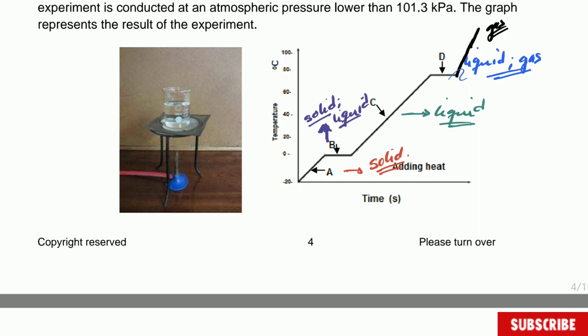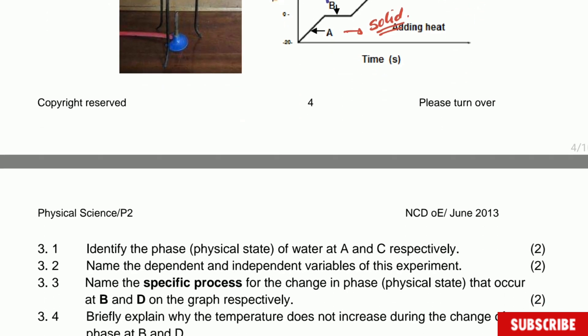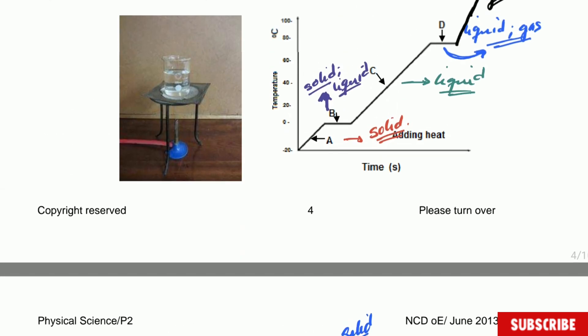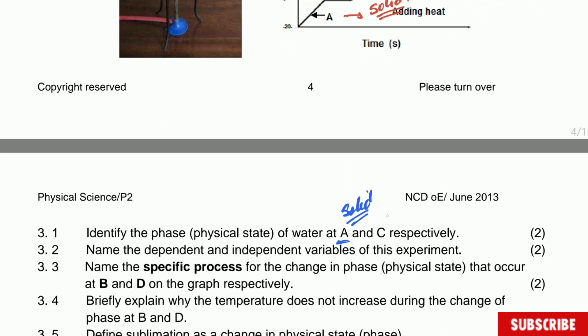Now don't confuse this new line I drew. We're talking here about the D that was liquid and gas. The black one there is only gas. So the question says identify the phase of water at A and C. It's already identified. At A is solid, and at C is going to be liquid. That was the first question of this question 3.